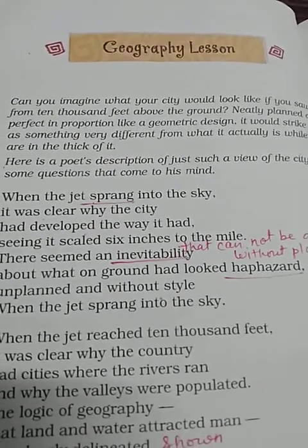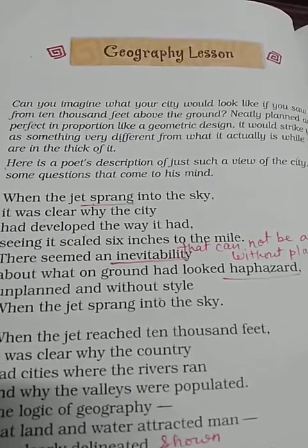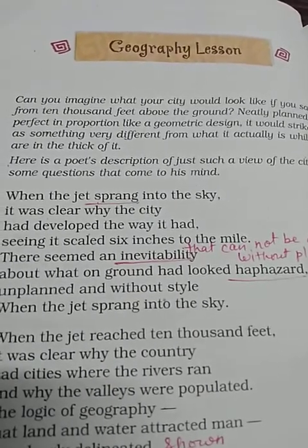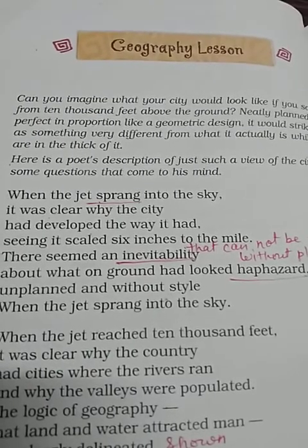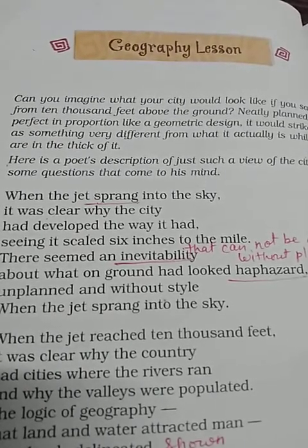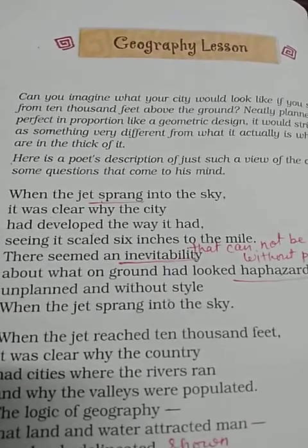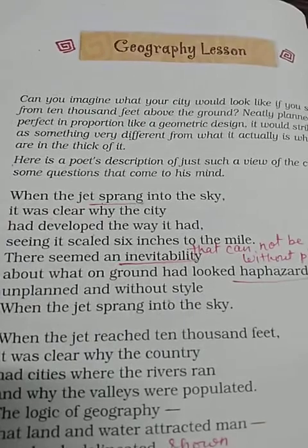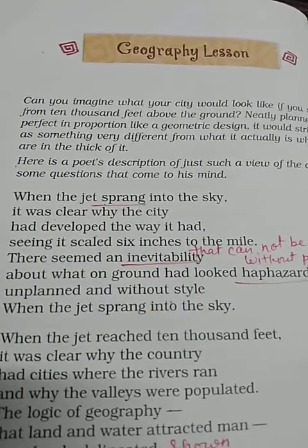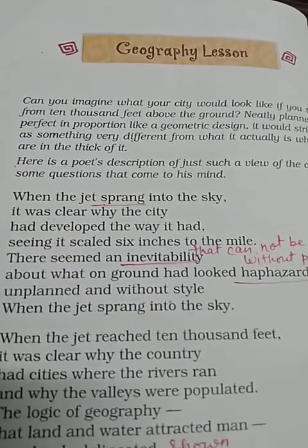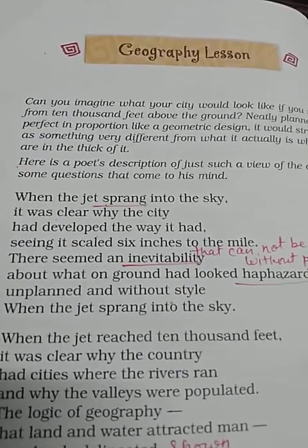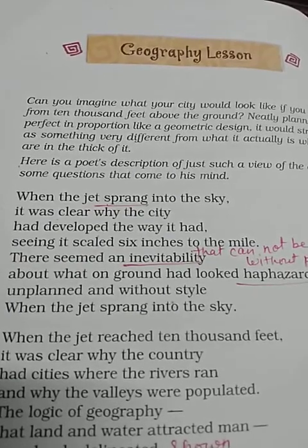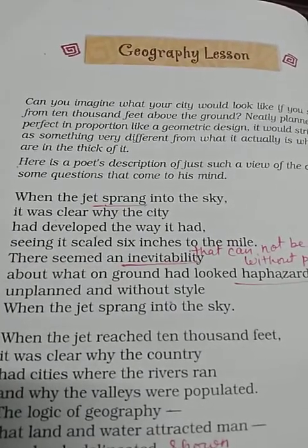The poet has reflected things like the image of a city, the logic of geography, and the actions of human beings — including narrow-mindedness — through the poem. Zulfikar Ghose presents a vivid description of an unplanned city. The city had grown as per its requirements and did not have any proper planning. At 10,000 feet, it was clear that cities grew near water resources to fulfil requirements like cultivation, transportation, and business activities.